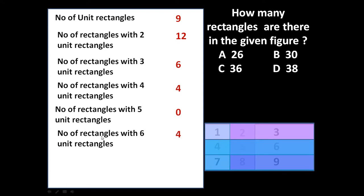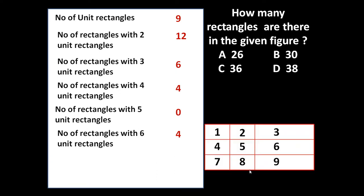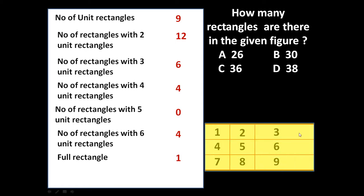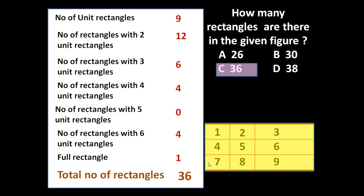With seven rectangles, no other rectangle can be formed. With eight unit rectangles, no new rectangle can be formed either. Only nine unit rectangles are there, so the full rectangle — the one with nine unit rectangles — is of course only one. So the total number of rectangles is: 9 + 12 + 6 + 4 + 0 + 4 + 0 + 0 + 1 = 36. Total 36 rectangles can be formed from the given figure.